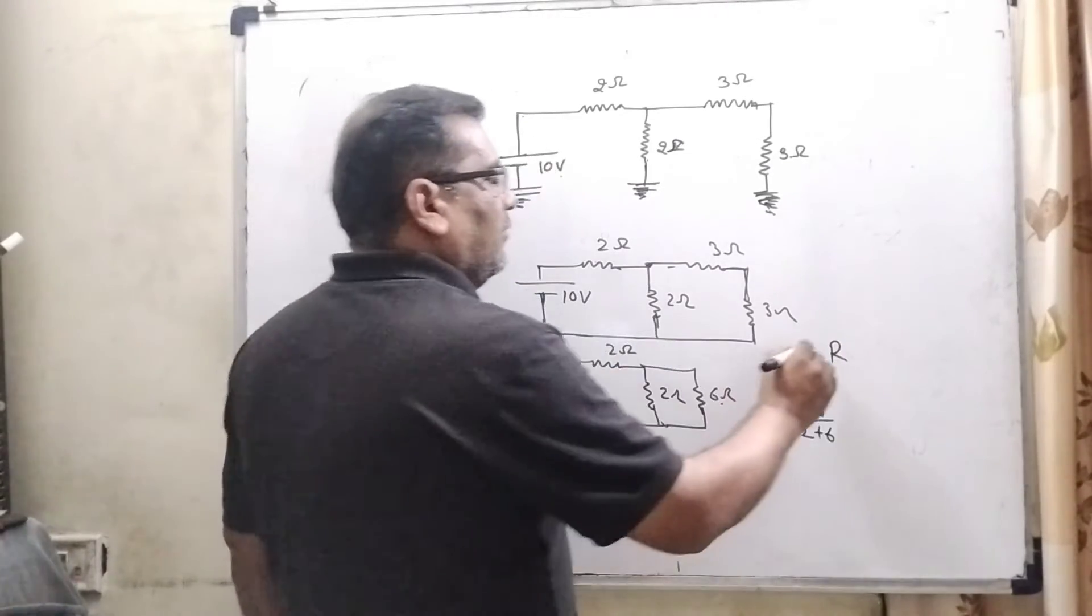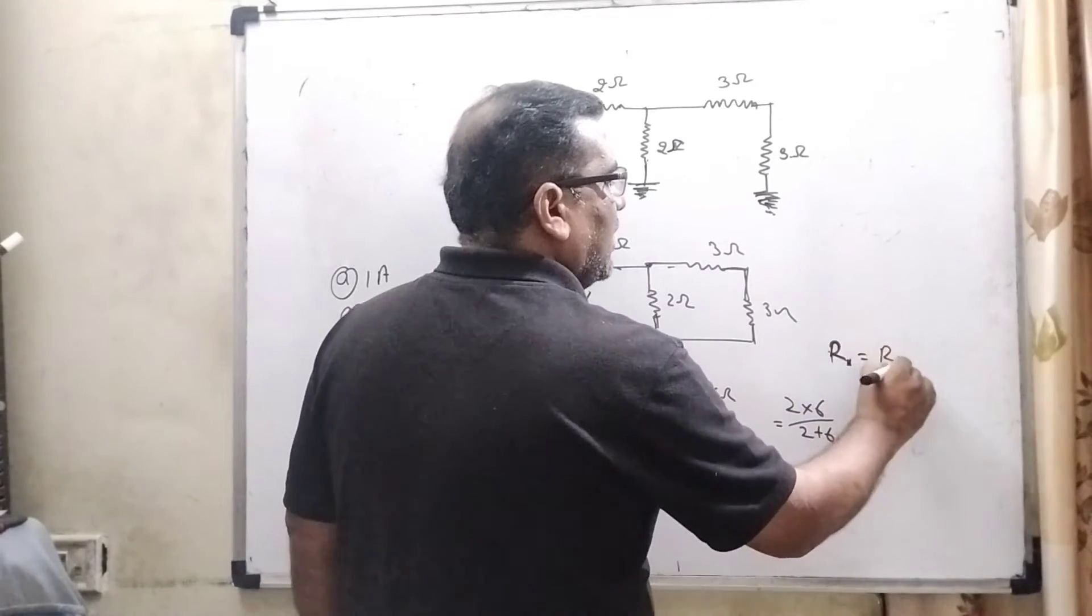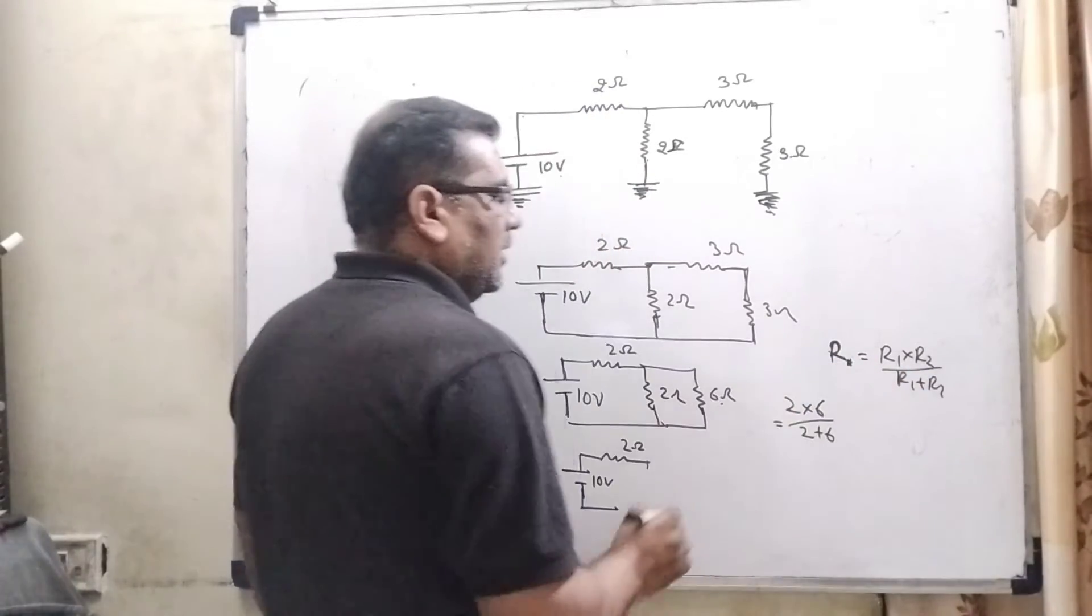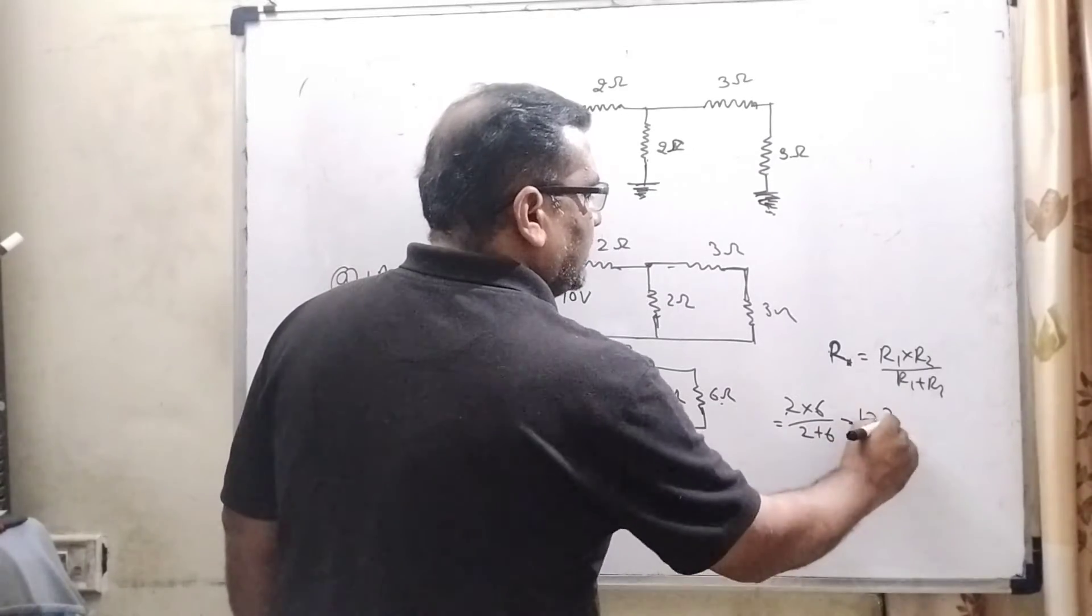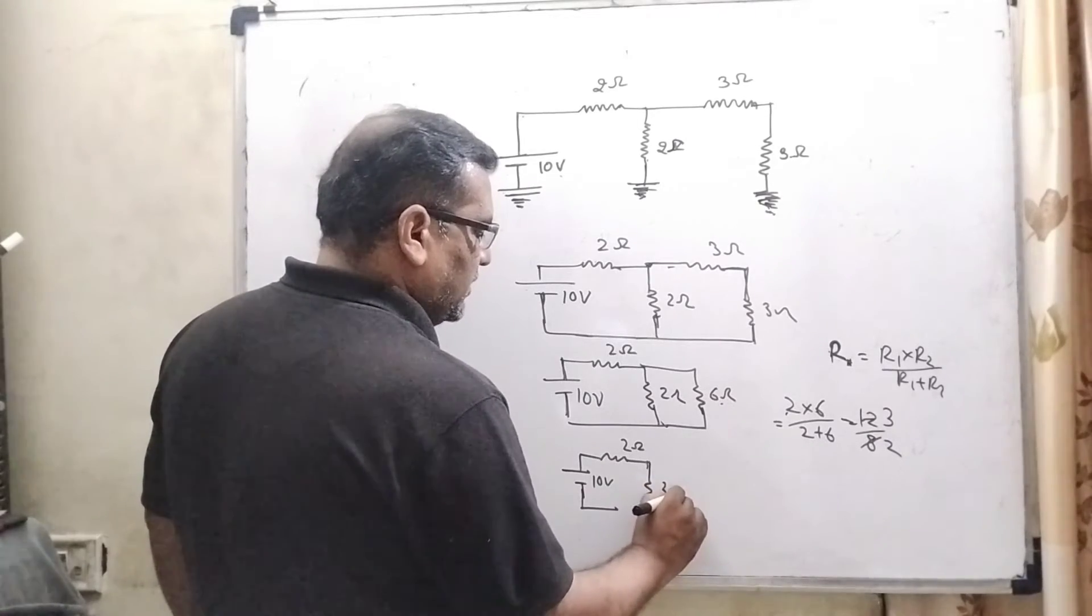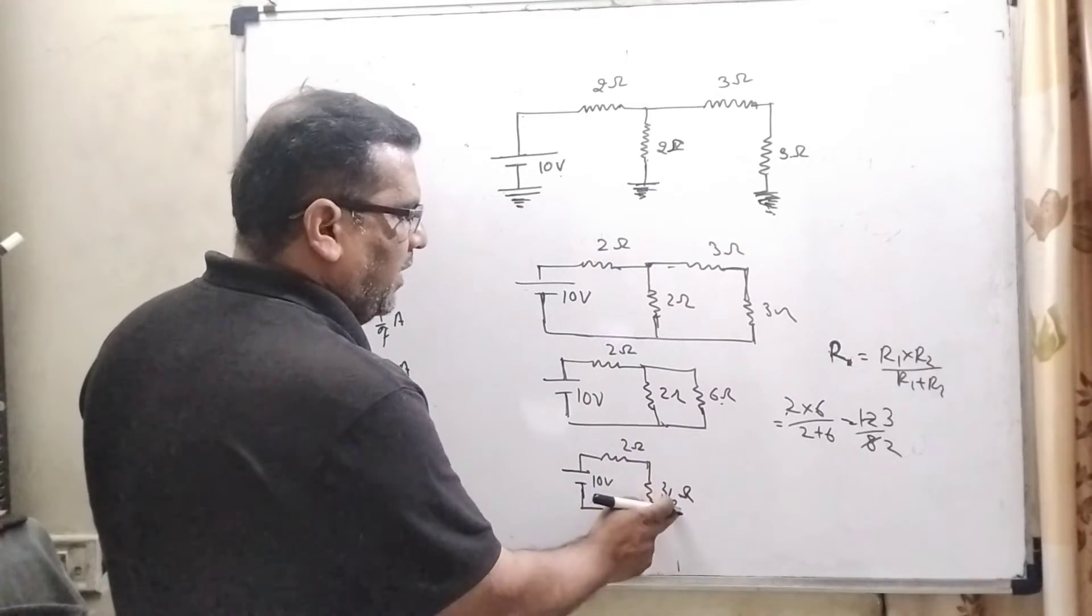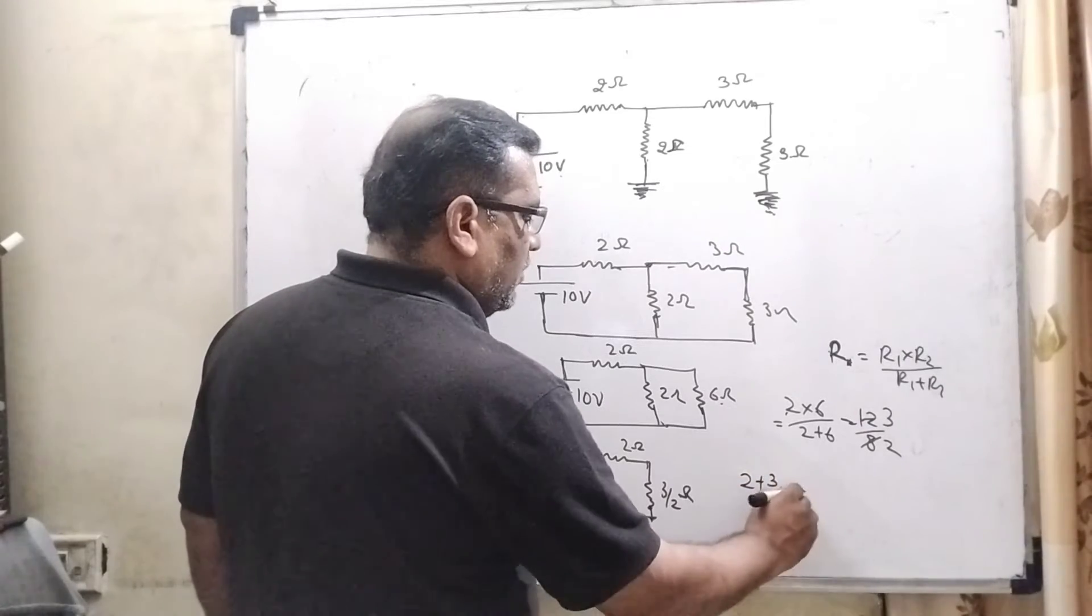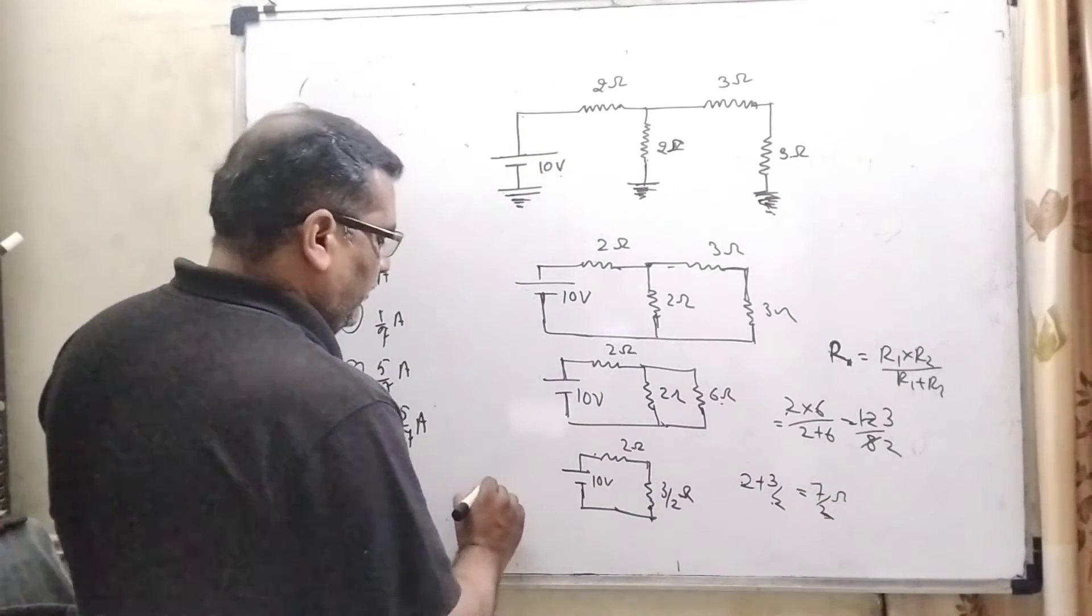Because the formula when 2 resistances are parallel is R1 into R2 divided by R1 plus R2. So therefore, 6 into 12 and 6 into 8, 4 into 8, 4 into 12, equals 3 by 2. So here, 3 by 2 resistance and now this 2 ohm and 3 by 2 ohm are in series. So therefore, 2 plus 3 by 2, how much? 2 into 4 and 3, equals 7 by 2 ohm resistance equivalent.